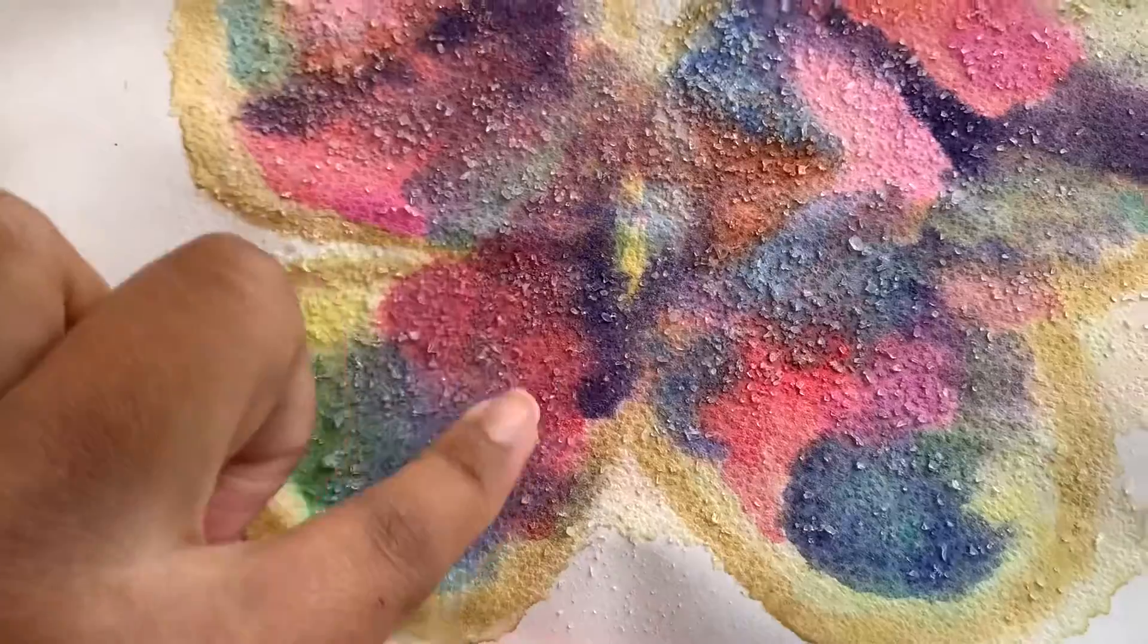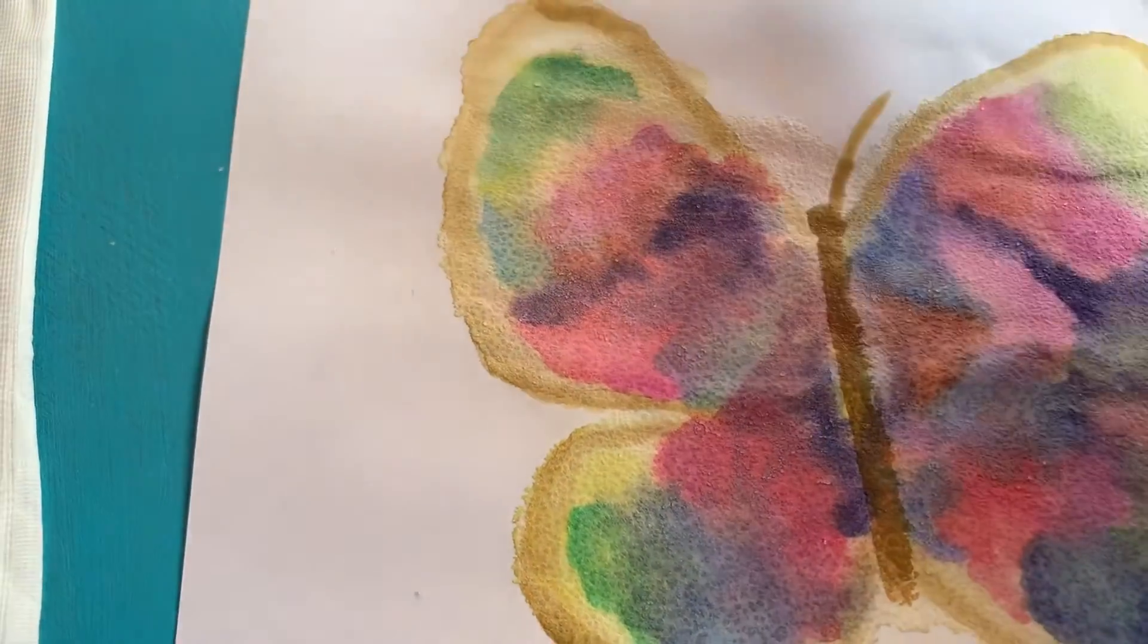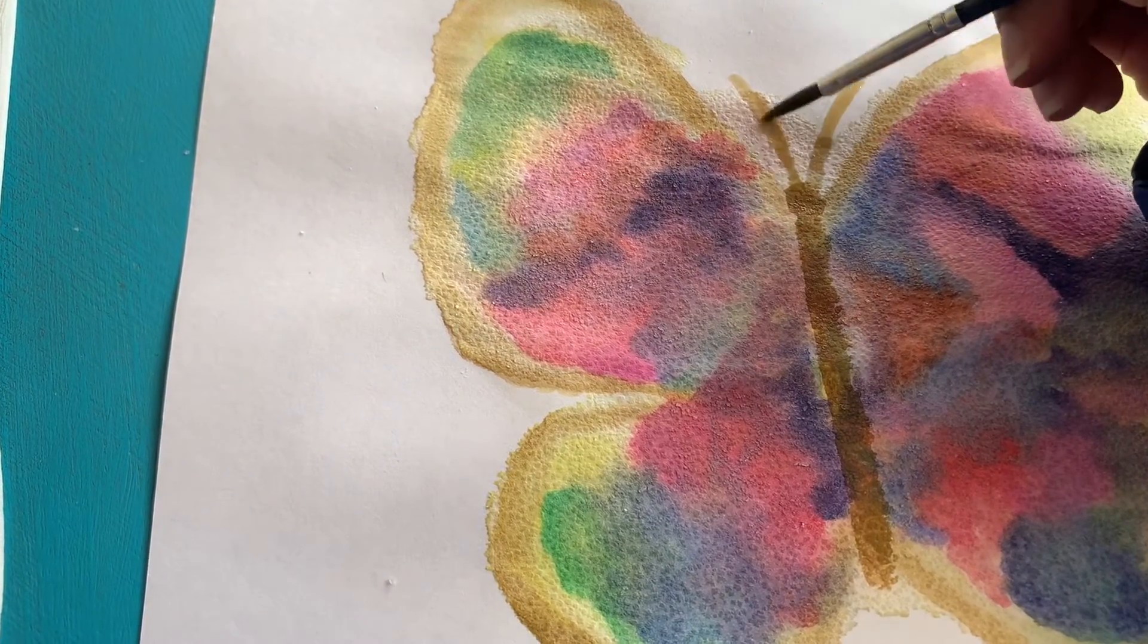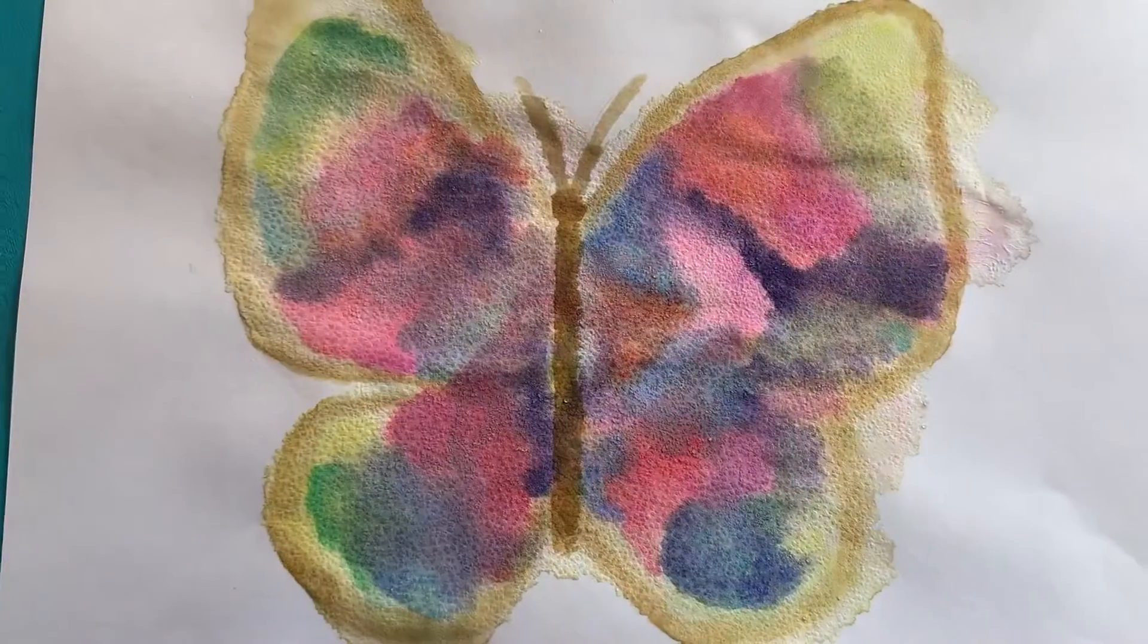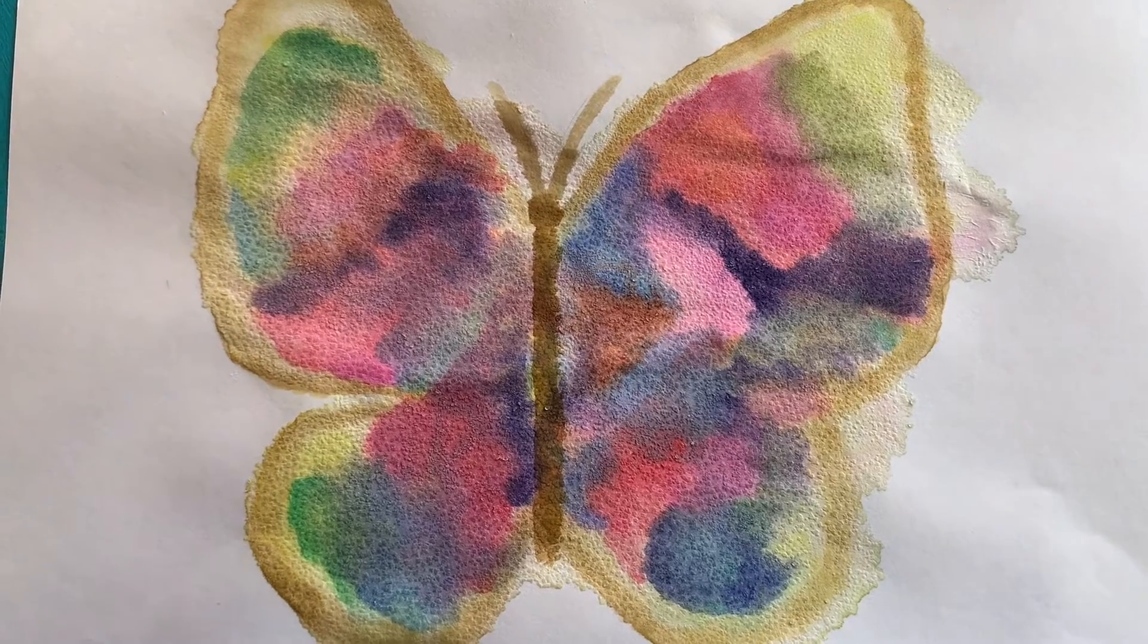Once it's all dry, you're going to wipe off all of the salt and finish painting your butterfly. Right here, I added a little bit of antennae and I drew the body. And you should end up with something like this.